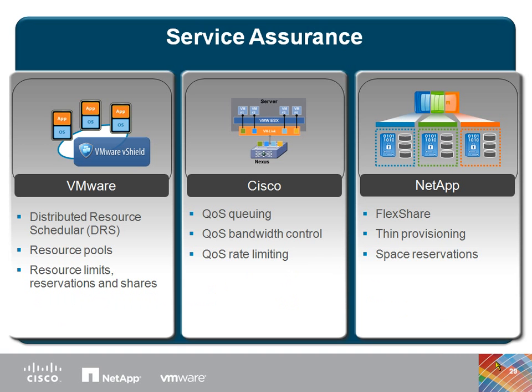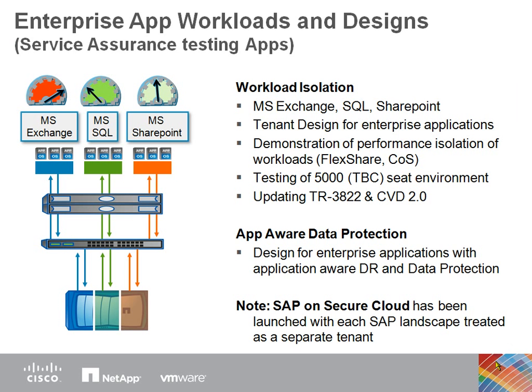Service assurance has always been a feature of SMT, thanks to VMware DRS and resource controls, Cisco QoS, and NetApp FlexShare. The architecture has now grown to include a best practices guide for Microsoft Exchange, SQL, and SharePoint, as well as a 5,000-seat VDI deployment. This includes a validation of the architecture's performance isolation features, which ensure that one tenant cannot have an undue performance impact on another.